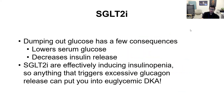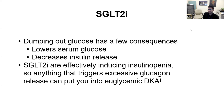When you dump out glucose, it has a few consequences. The first is it lowers your serum glucose, so if you end up in DKA and your sugar is high, this can counteract that. It also decreases your insulin release because you are not hyperglycemic. So what they're actually doing is inducing insulinopenia, which is generally a good thing — but you have to balance this with what triggers excessive glucagon release, because if you have too much glucagon and not enough insulin, you can end up in DKA.